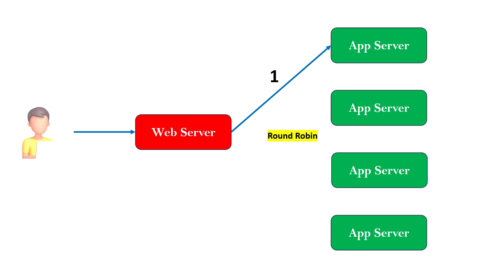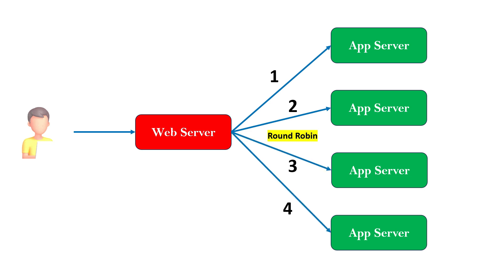For example, if the first request comes to the web server, it goes to application server 1; the second request goes to application server 2; the third to application server 3; and the fourth to application server 4 — this being the specific case when you have four application servers in the backend. Then the fifth request will go back to the first application server.